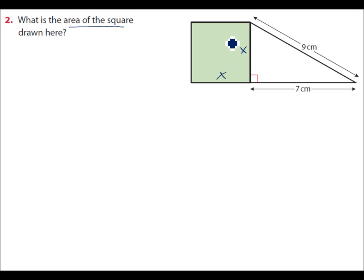And the area of the square would be length by breadth, which would be x by x, or x squared. Now, considering the triangle here, we see that the largest side is 9, so that's our hypotenuse. It's opposite the right angle.